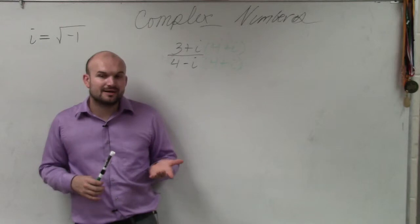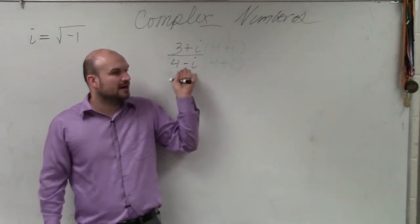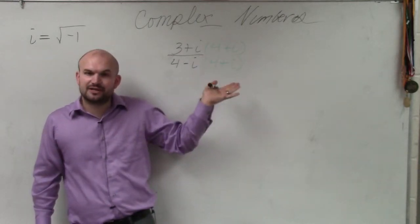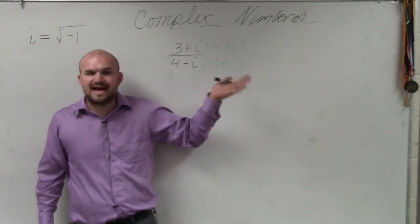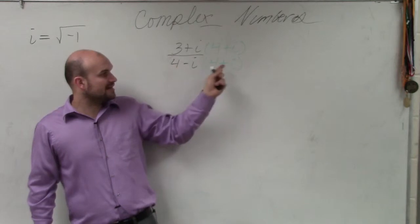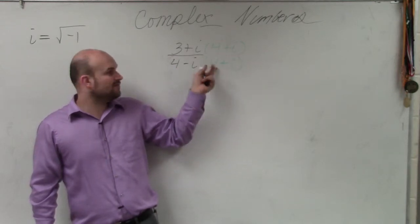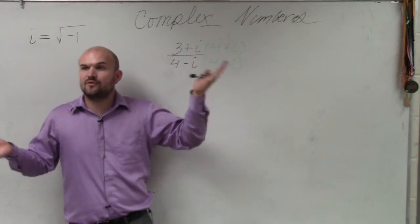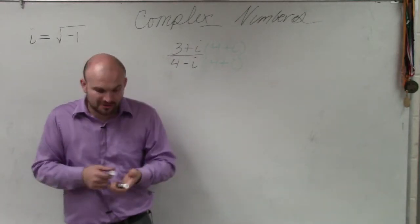And the reason why the conjugate is helpful is because when you multiply a binomial times its conjugate, the middle terms add to 0. So think about it: 4 times 4 is 16, 4 times i is 4i, 4 times negative i is negative 4i. Positive 4i and negative 4i add to 0. So I don't have any middle terms.